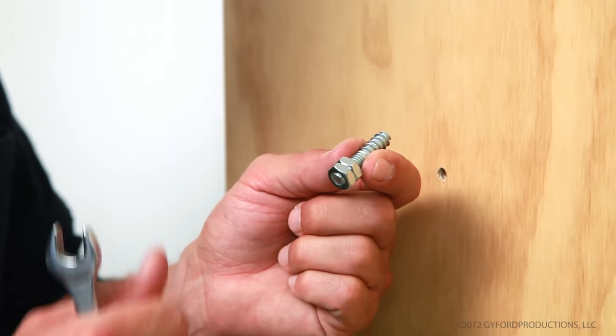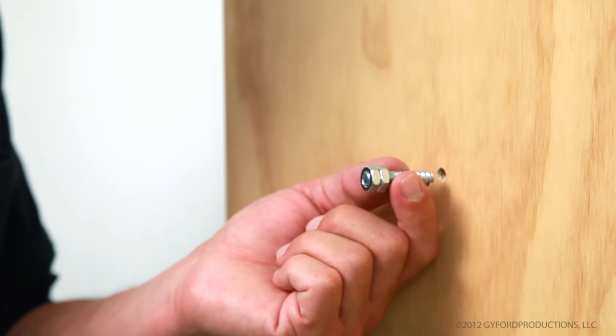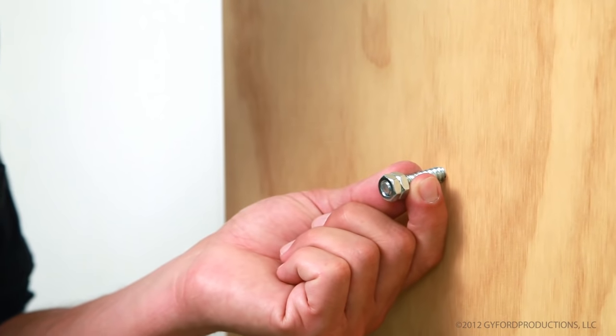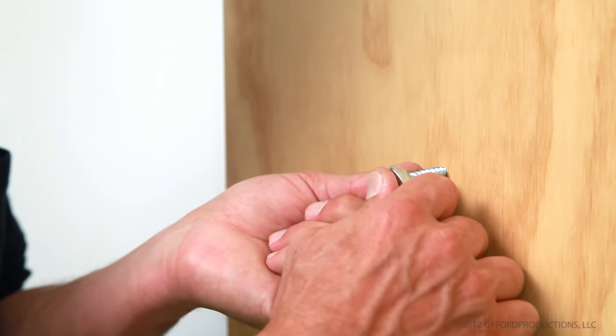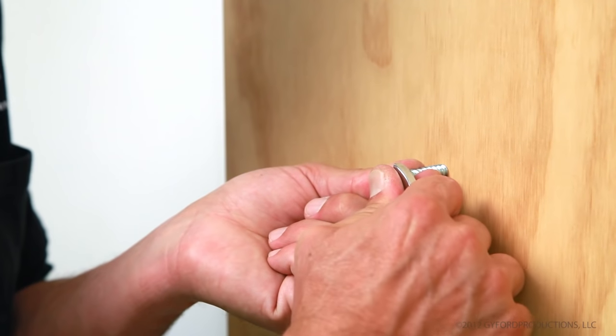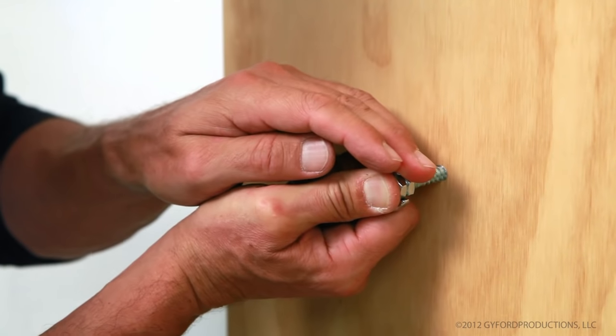Now that we've got the head formed with the two jam nuts, we'll go ahead and start them into the hole. Now this is going to take a little bit of pressure as you turn the outside nut, so keep your thumb up against it and start turning it into your pilot hole.